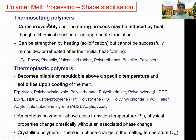Apart from the thermoset/thermoplastic classification, polymers can also be classified as amorphous or crystalline. Amorphous polymers do not undergo a clear phase change as heat is added or removed — they transition from a glassy to a rubbery state. This transition point is known as the glass transition temperature, Tg. The properties of amorphous polymers depend significantly on whether they are above or below Tg.